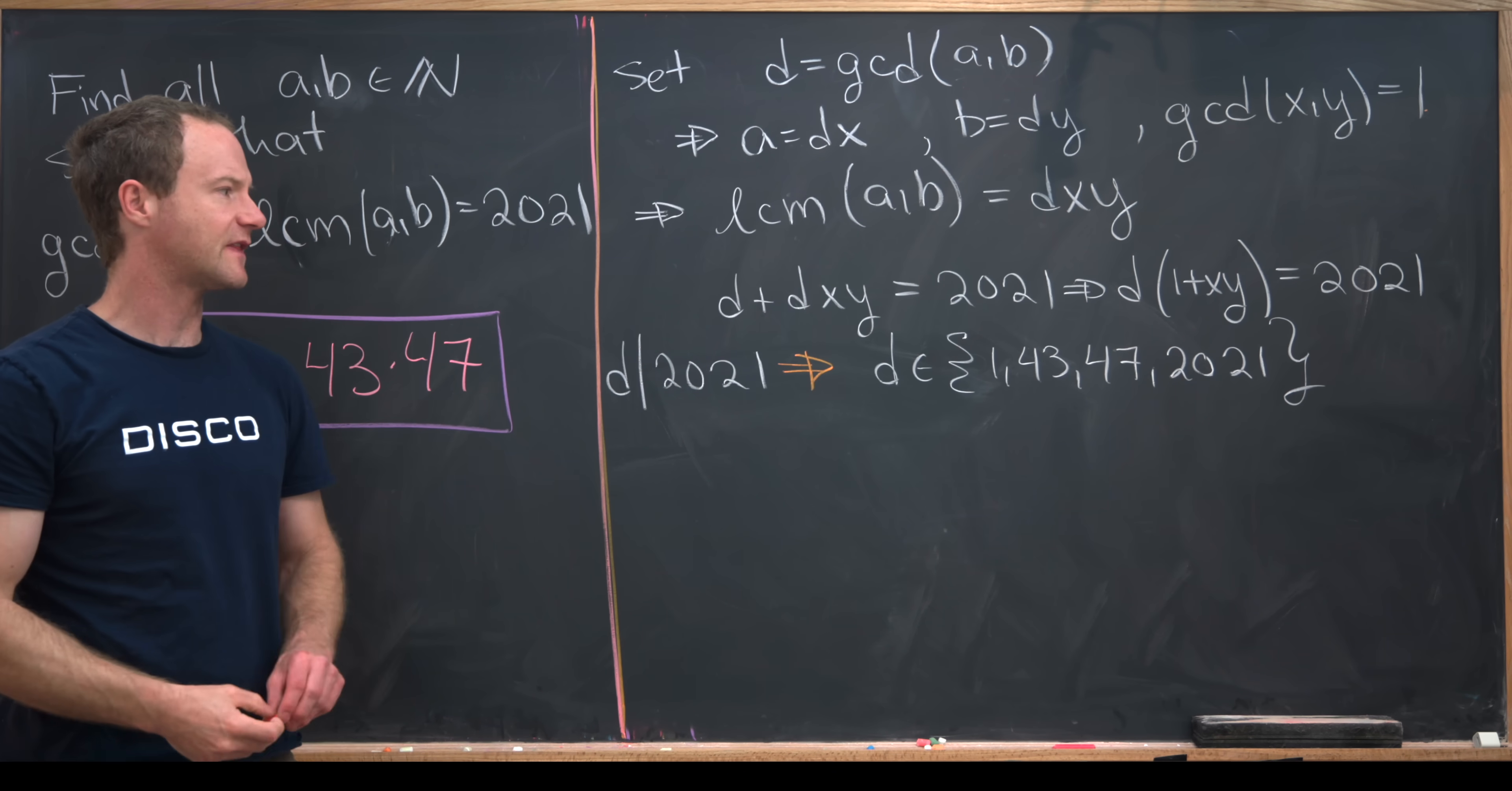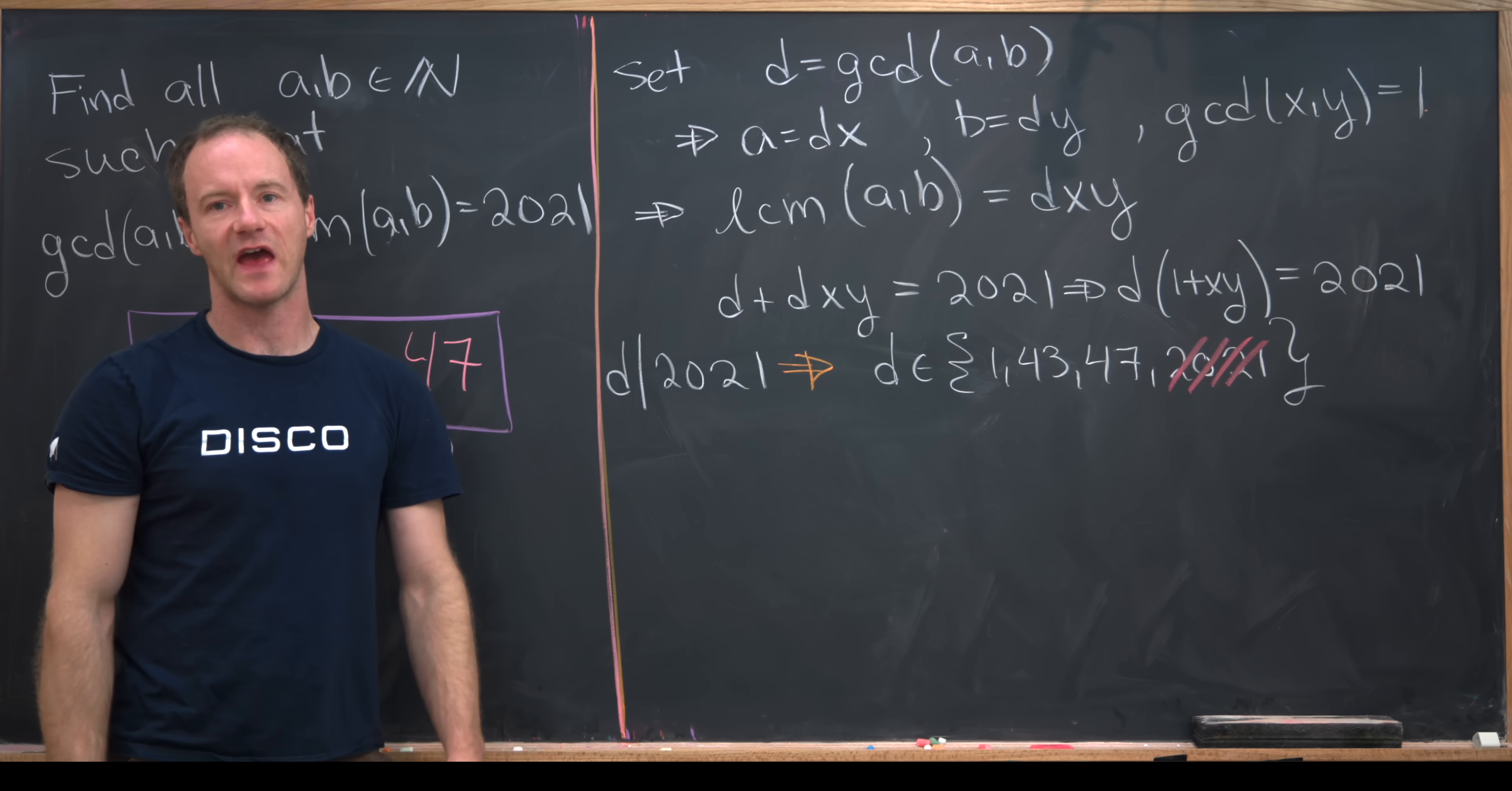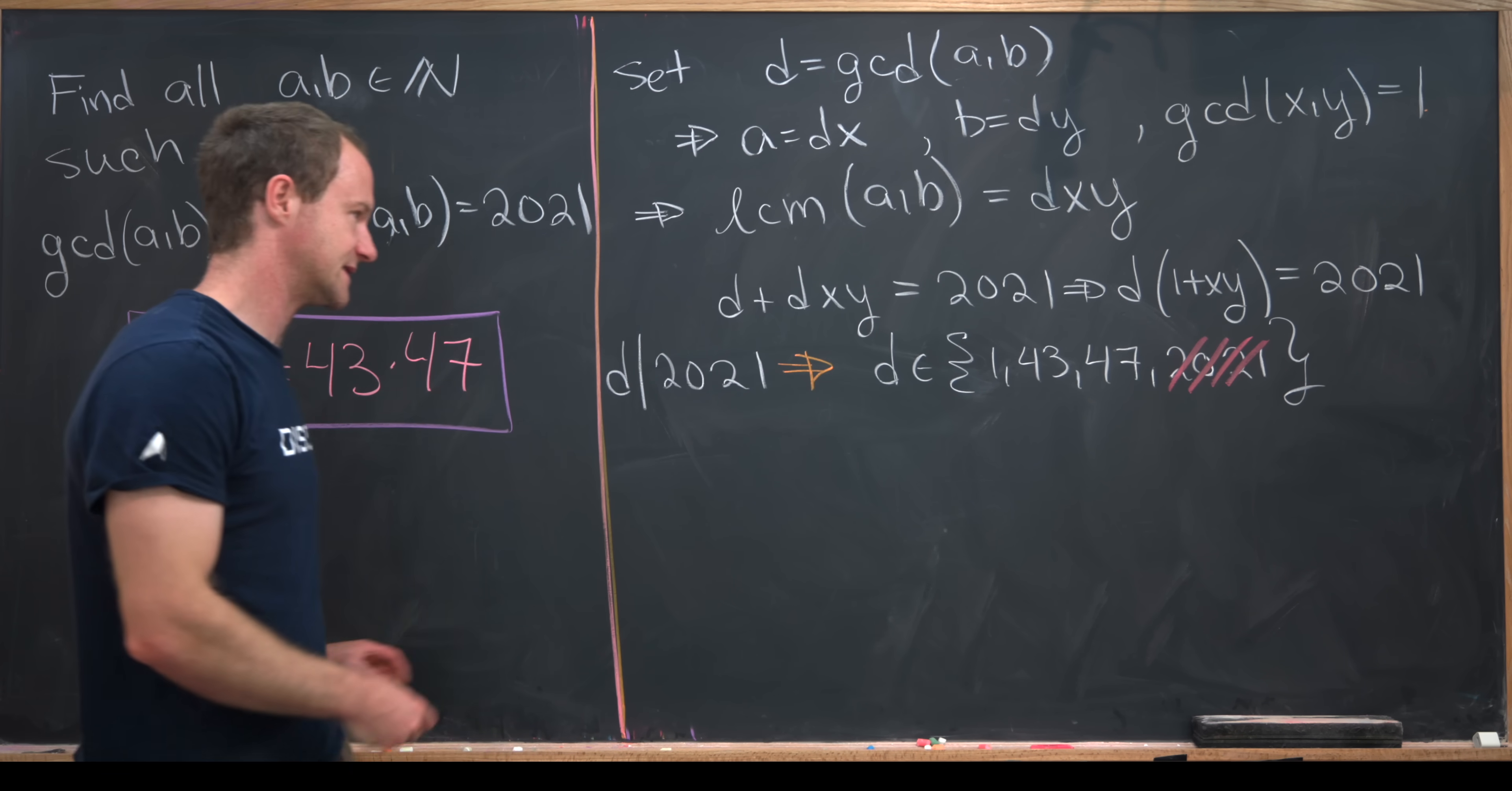In fact, if you play the game, you'll see that it is impossible for D to be equal to 2021. If D was equal to 2021, XY would have to be equal to zero, which means that one of A or B would have to be equal to zero. But I'm not taking zero to be a natural number, so that won't work in this case. If we do allow zero to be a natural number, we would get some more solutions. Now we're just going to work through these one case at a time.